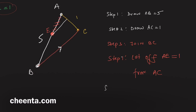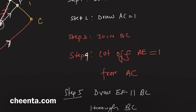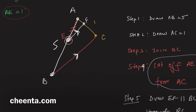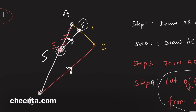Step five: draw EF parallel to BC through E. You have the magical ability to draw parallel lines, so you can do this. You already have the point E because you cut off AE from AC earlier. Once you draw the line parallel to BC, wherever it hits AC you call that point F. By the previous key idea, AF is one over five.